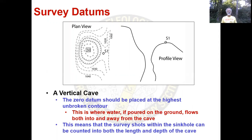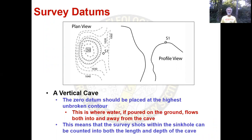For a vertical cave, the zero datum should be placed at the highest unbroken contour. This is where water, if poured on the ground, flows both into and away from the cave. This means that any survey shots within the sinkhole can be included in both the length and depth of the cave. You can see in the plan view on the left that Station S1, the zero datum, is in the low gap between the pit on the left and the rest of the world on the right.